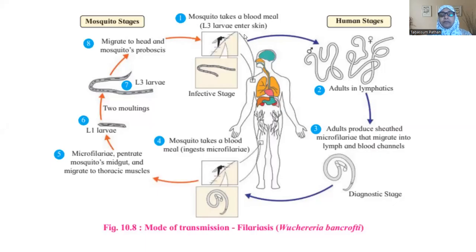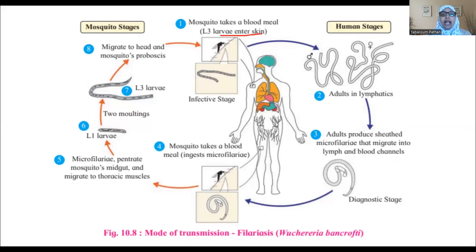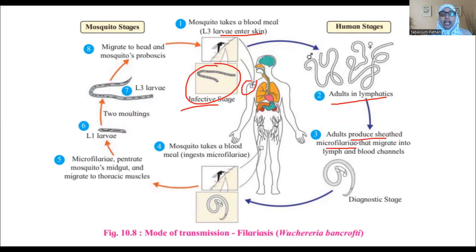Looking at the short life cycle of the filarial parasite: the mosquito takes a blood meal — if the mosquito is already infected with the filarial worm and bites a healthy individual, the worm enters that individual. The adult worms in the lymph system produce sheathed microfilariae, which are thread-like worms that move to the lymph and blood channels. At this stage, a blood test can detect the infection.